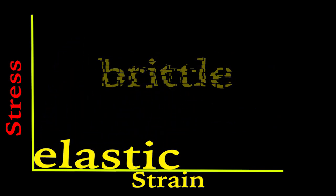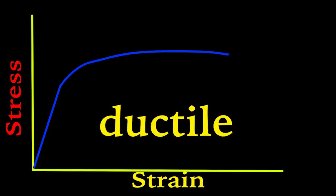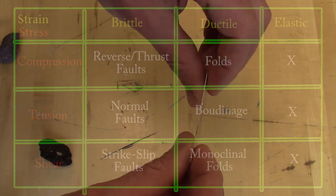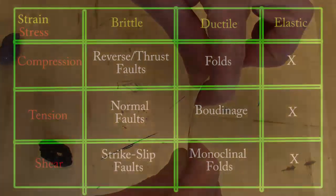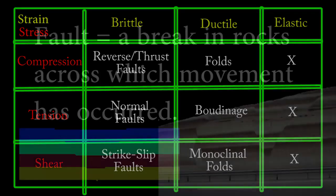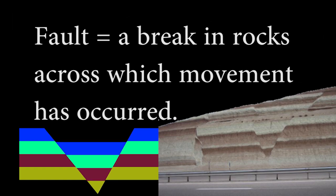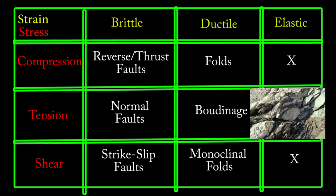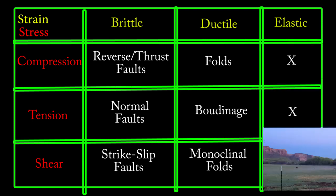Now we can combine types of stress and strain to produce a quick list of common geologic structures. Elastic strain does not produce permanent structures, as once the stress is released, the rock goes back to its original form. Brittle deformations all cause what are known as faults, which are defined as breaks in the rock across which movement has occurred. Ductile strain produces folding with compression and boudinage with tension, and monoclinal folds with shear stress.